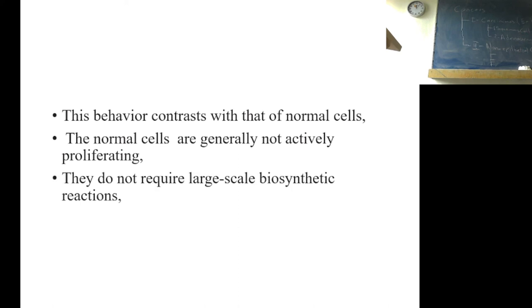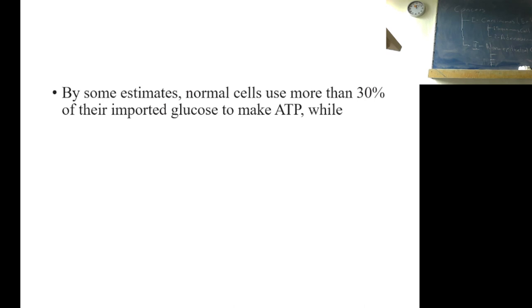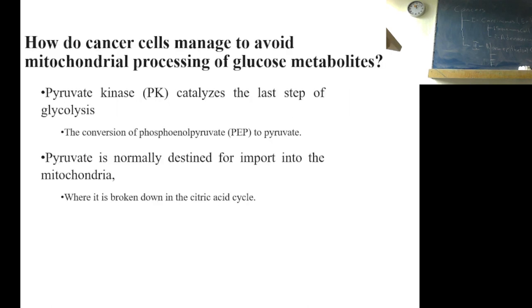This behavior contrasts with that of normal cells. The normal cells are generally not actively proliferating. They do not require large-scale biosynthetic reactions. They depend largely on ATP to sustain their metabolic activity. By some estimates, normal cells use more than 30% of their imported glucose to make ATP, while cancer cells use only 1% of their glucose for this purpose.